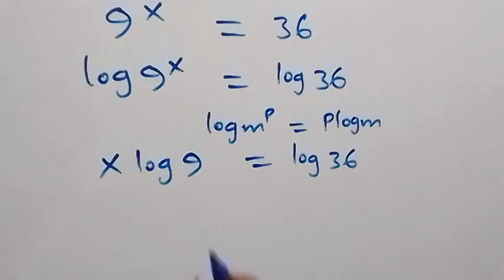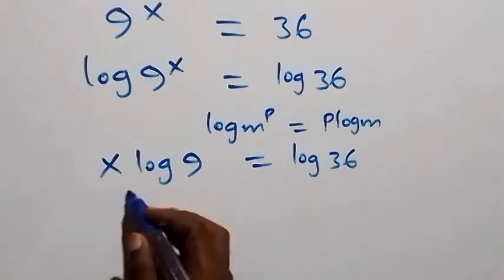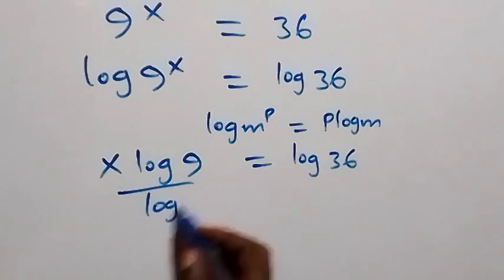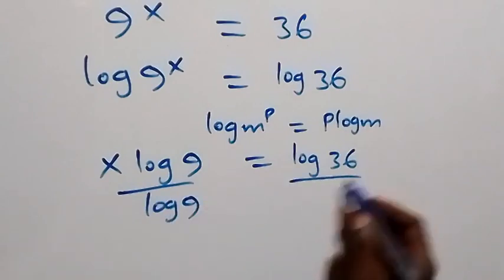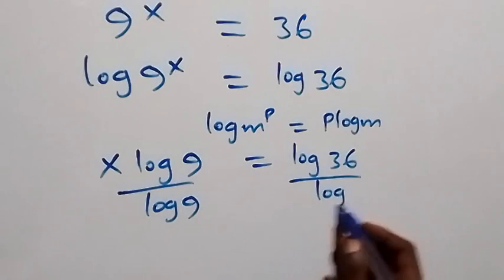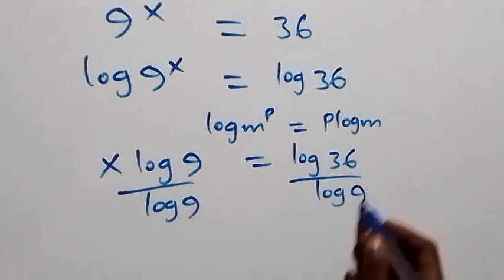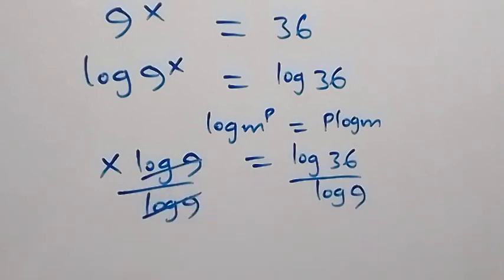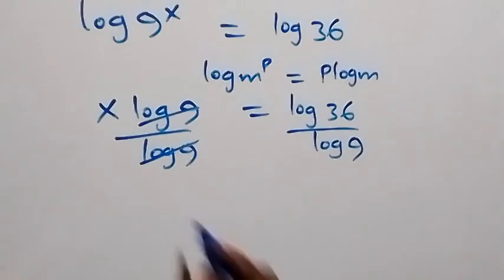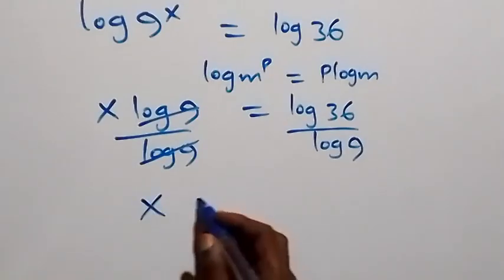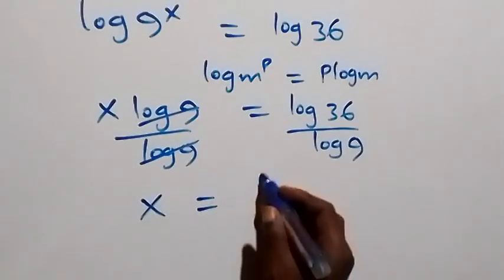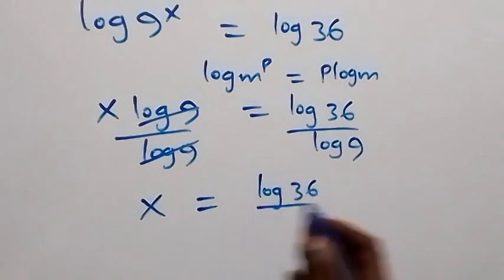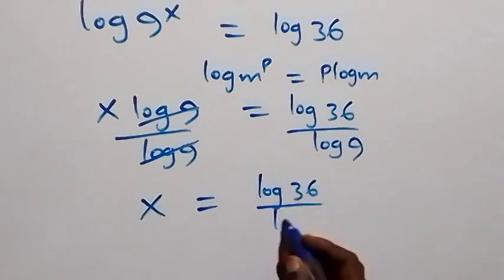The next step: divide both sides by log 9. We divide this side by log 9 and also this side by log 9. Log 9 cancels each other and we are left with x, which equals to log 36 over log 9.